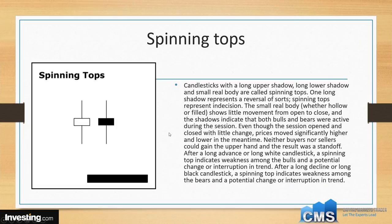Now, spinning tops. Spinning tops are similar to what we saw in the bulls and bears section — candlesticks with long upper shadows, long lower shadows, and a small real body. So they look just like a top. One long shadow represents a reversal of sorts. Spinning tops represent indecision: because you have the wick up and the wick down and it ends up where it is, the markets are completely undecided — they're waiting for something to give them direction.